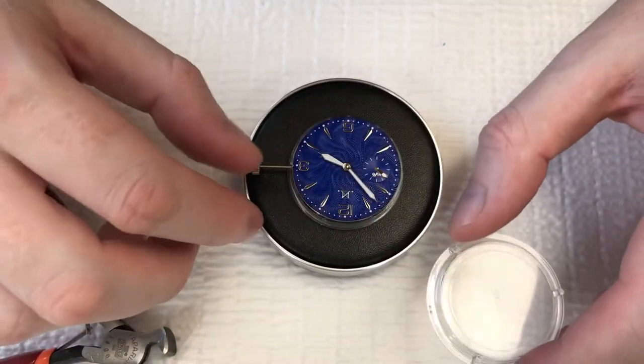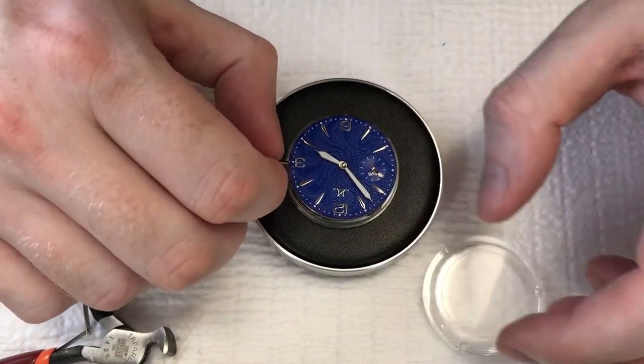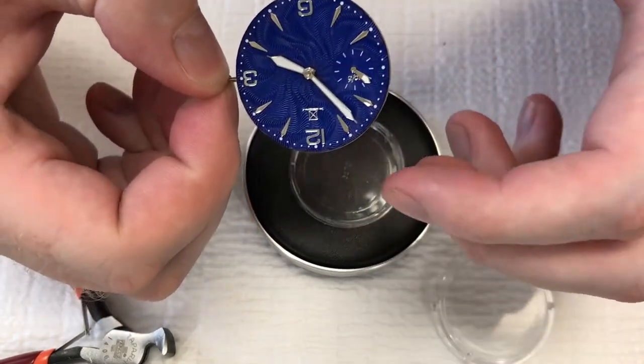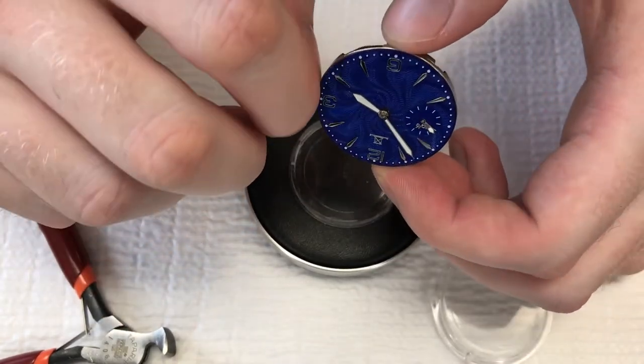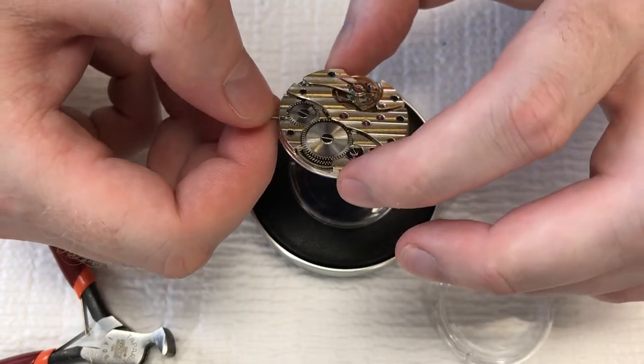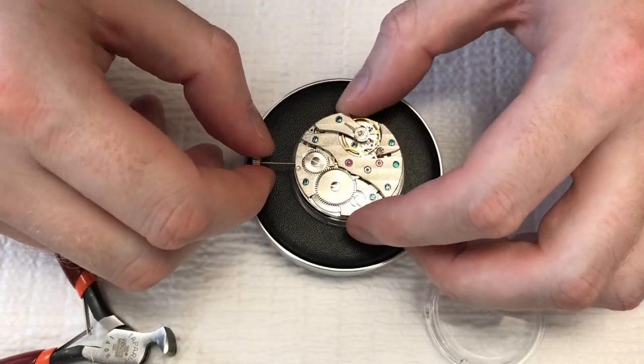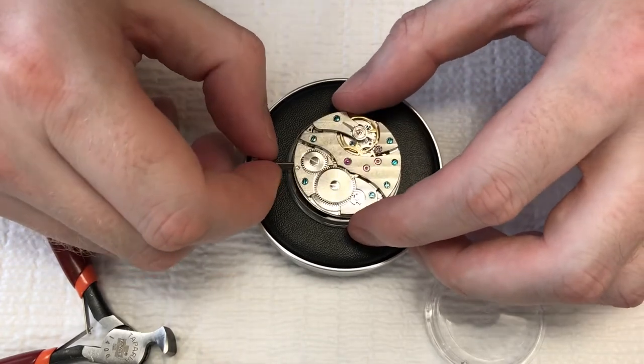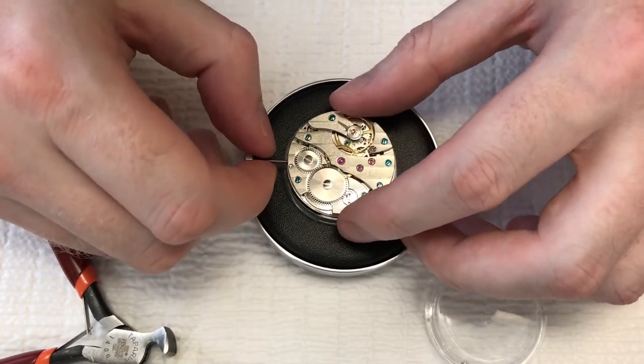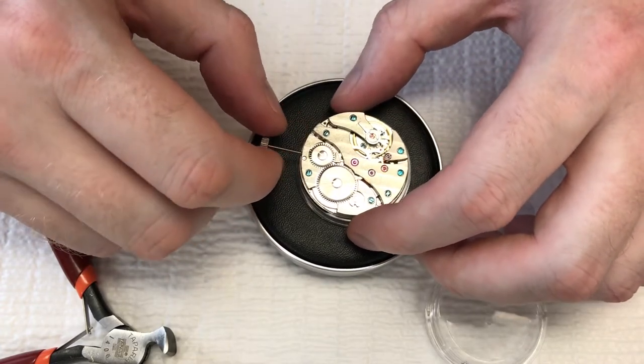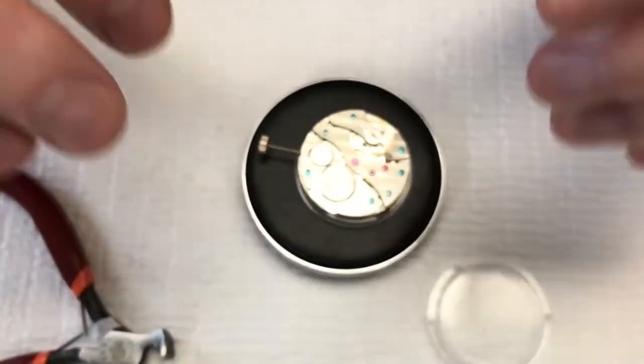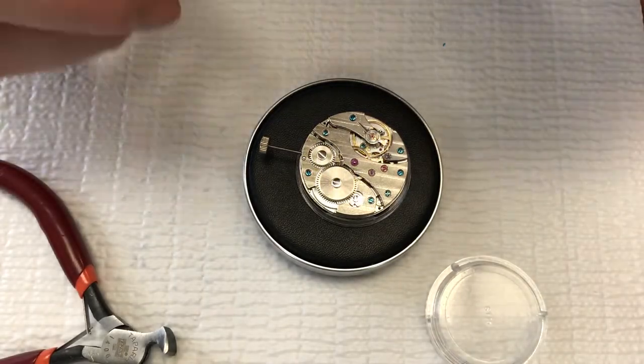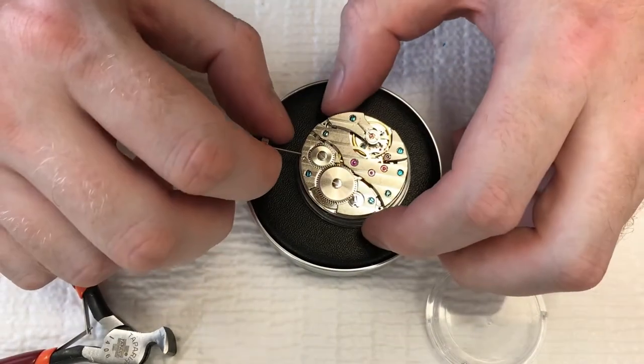Of course, the thing at this point with working with this movement is making sure that I don't mess up the hands or hurt the movement in any other way when taking the stem off. So I'm going to set it up here on this movement holder in a way that it will set fairly even. I shouldn't have to put that much pressure on this.